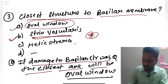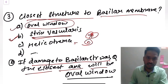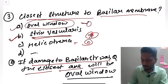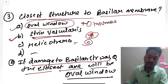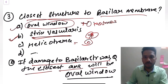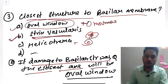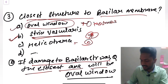Helicotrema is the last end of the cochlea where the scala vestibuli and scala tympani meet. The oval window is where the stapes sits for sound conduction; fixation of stapes on the oval window causes otosclerosis. So: closest structure to basilar membrane = stria vascularis; if damage to basilar membrane is asked = oval window.